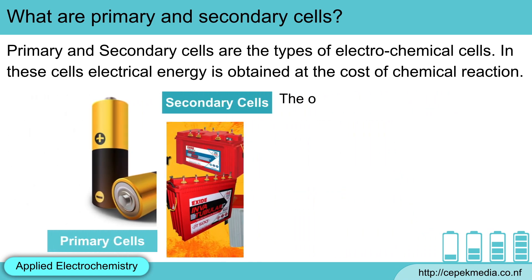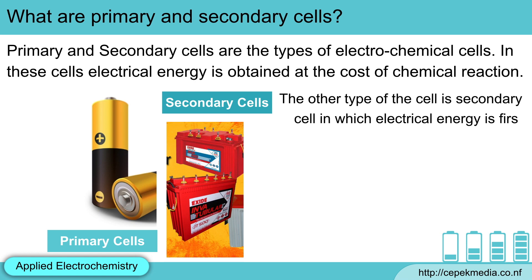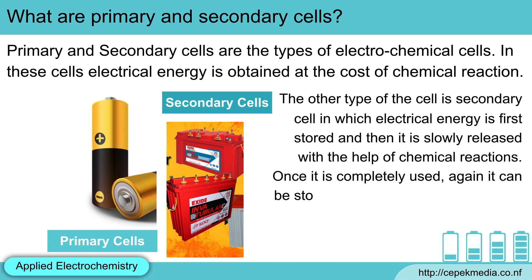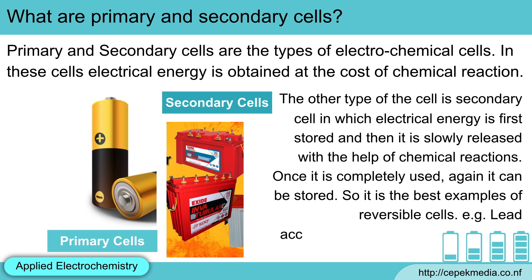The other type is the secondary cell, in which electrochemical energy is first stored and then slowly released with the help of chemical reactions. Once it is completely used, it can again be restored. So it is the best example of a reversible cell. Examples include the lead accumulator and alkali storage cell.